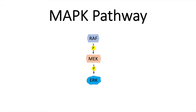They are also known under a different name. RAF for example is also known as the MAP kinase kinase kinase, MEK is known as the MAP kinase kinase, and ERK is literally the MAP kinase.